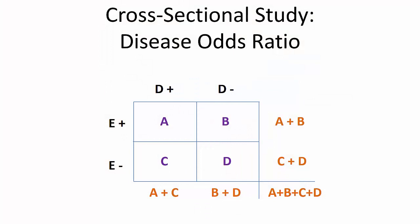So here's a blank 2x2 table. We are going to go over the disease odds ratio, which is what you would calculate from a cross-sectional study design. When I worked at the U.S. Army in one of our data centers, I noticed that soldiers with college degrees were less likely to be injured, so let's use that as our example.